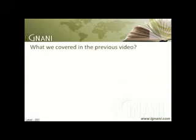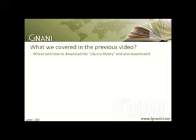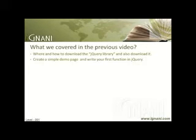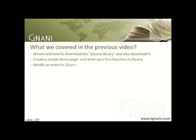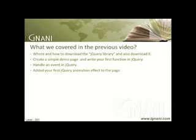In our previous video, we looked into where and how to download the jQuery library, and we also downloaded it. We created a simple demo page with a link and a text message, and wrote our first function in jQuery. We handled the click event from jQuery to execute it, and animated the page by toggling the message on and off upon clicking the link.